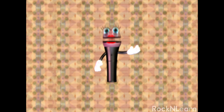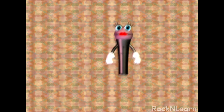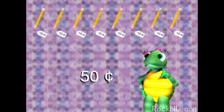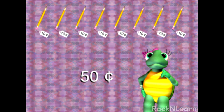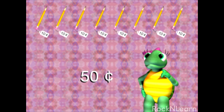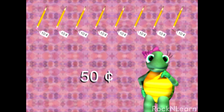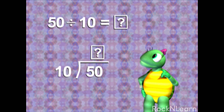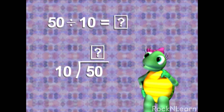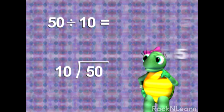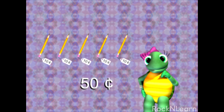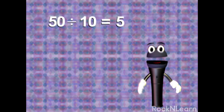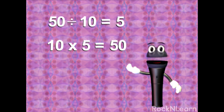Division is something you can use in everyday life, like when you're buying things. Michelle had 50 cents and she wanted to buy some 10-cent pencils. If the price included sales tax, how many pencils could Michelle buy with 50 cents? The problem can be shown two different ways. Both mean 50 divided by 10 equals... 50 divided by 10 equals 5. So Michelle could buy five 10-cent pencils with 50 cents. Let's check her answer with multiplication. Because 10 times 5 equals 50, this division problem is correct.